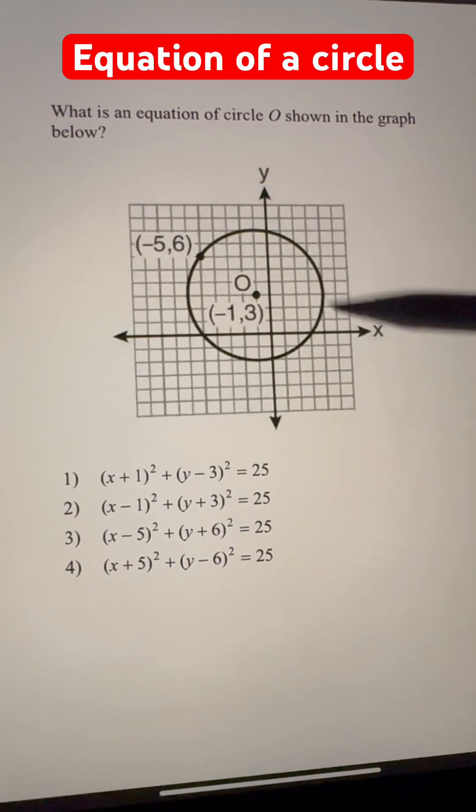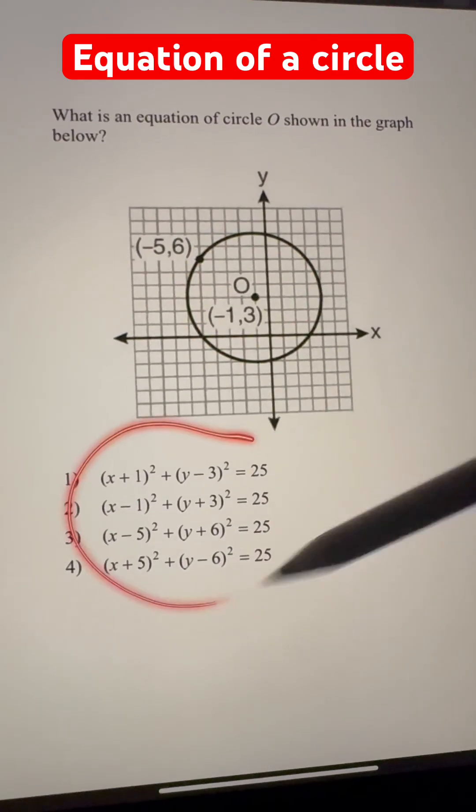What is an equation of circle O shown in the graph below? Four options are given here.